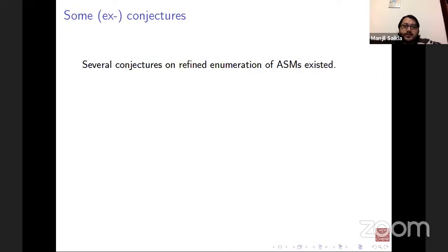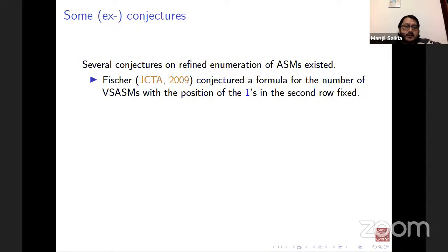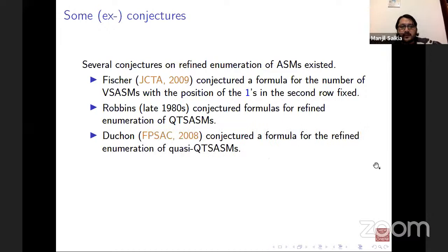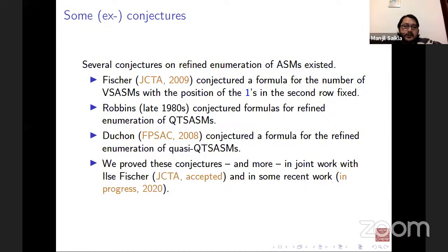Several conjectures on refined enumerations of ASMs existed. For example, Fischer conjectured a formula for the number of vertically symmetric ASMs with the position of the one in the second row fixed. Robbins conjectured formulas for refined enumeration of quarter-turn symmetric ASMs. Duchon had a conjecture for quasi-quarter-turn symmetric ASMs. We proved these conjectures and more in joint work with Ilse Fischer, with additional results currently in progress.